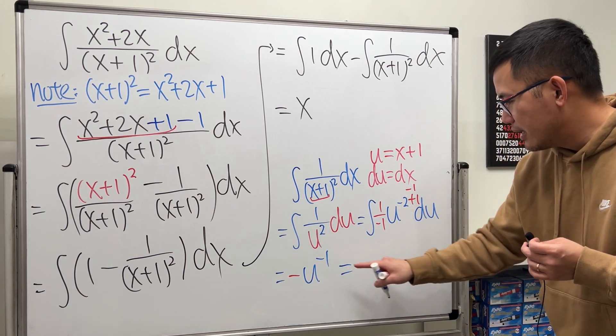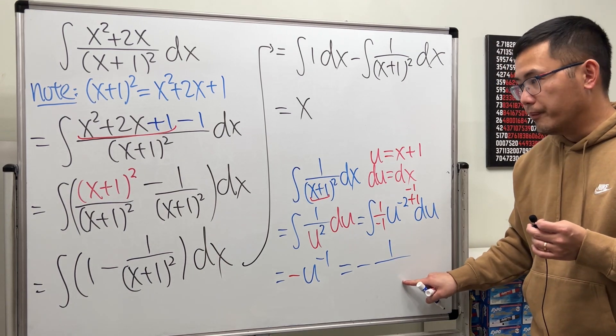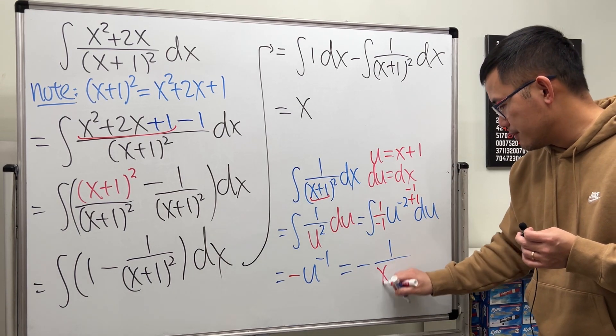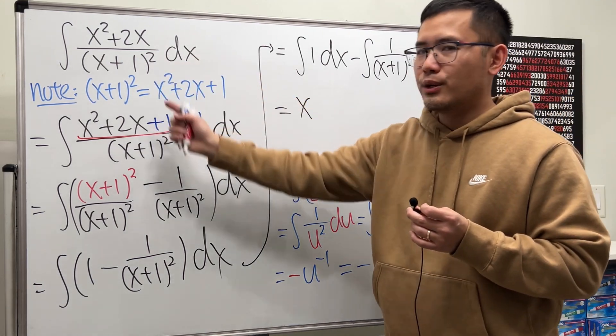So here we have negative, and then u to the negative 1 is the same as 1 over u, and u is x plus 1. In fact, you don't need to put down plus c here, because we are trying to do this integral.